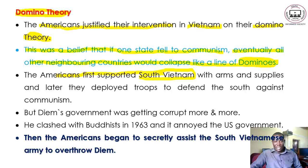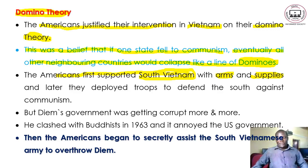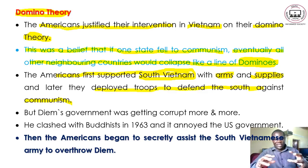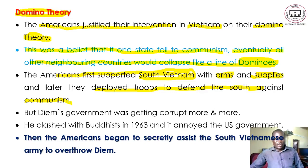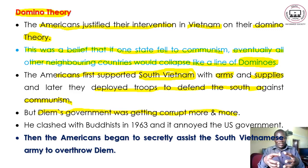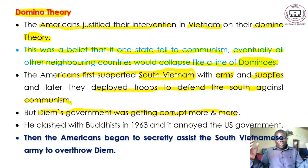The Americans first supported South Vietnam with arms and supplies. At first they did not send troops — they were just supplying arms, food, and whatever was needed. Later they deployed troops to defend the south against communism. But Diem's government was getting more and more corrupt; the more the Americans pumped in money, the wealthier and more corrupt the leader of South Vietnam became.